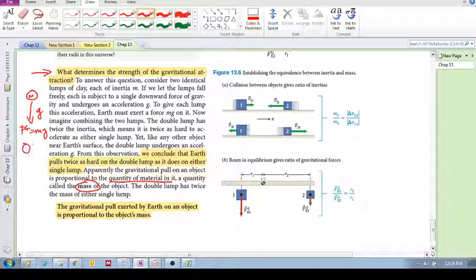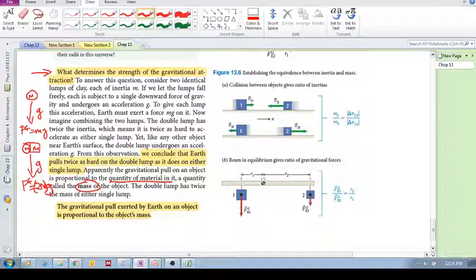But now what if we have two of those? Two of those, mm, the force now becomes 2m times g. So the force has now doubled because the inertia has doubled, the mass has doubled, but g remains the same.